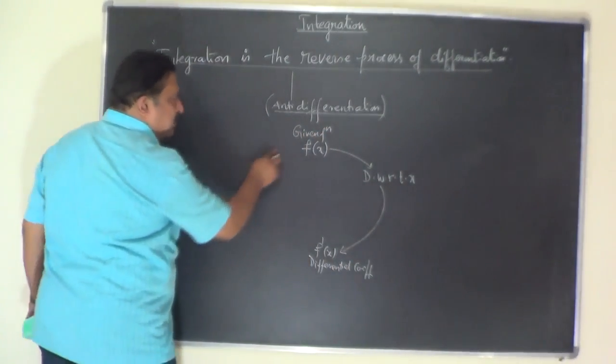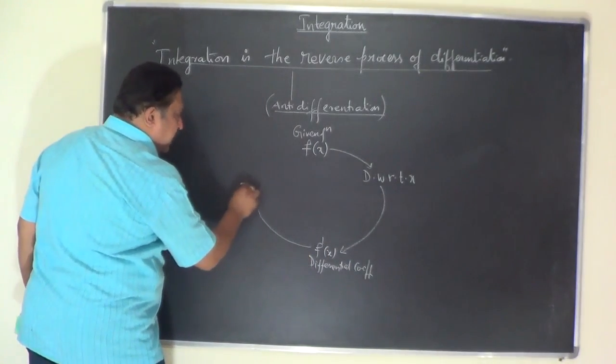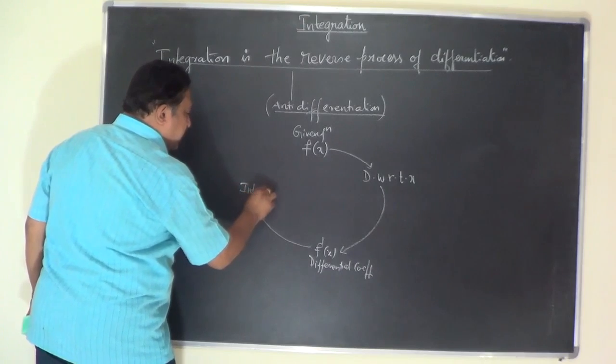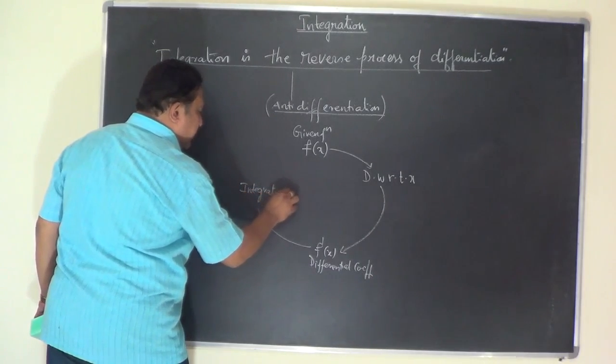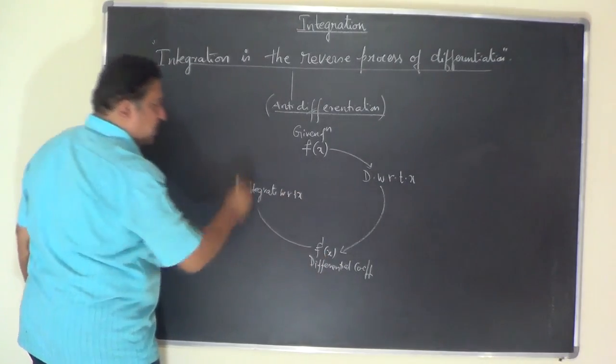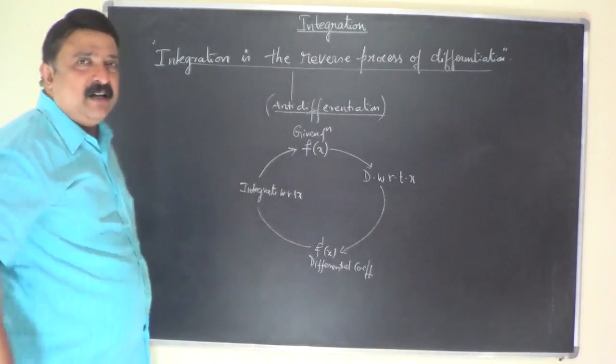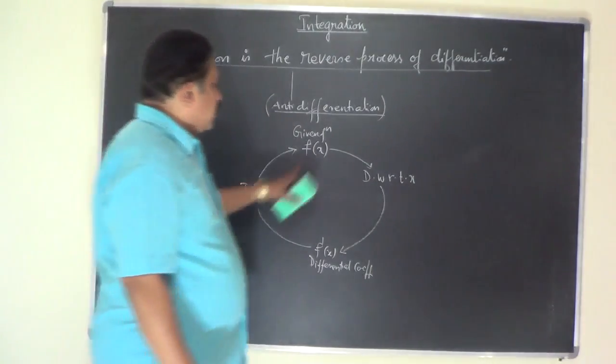Now coming back to get f of x, what you need to do is you integrate with respect to x. Integrate what? Integrate f dash of x with respect to x. Then what you will get? You will get back f of x. Very simple.